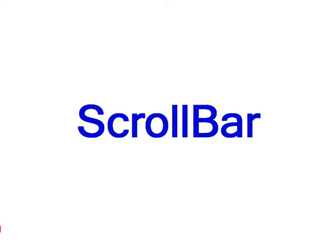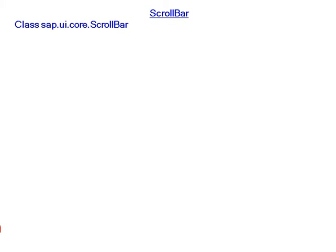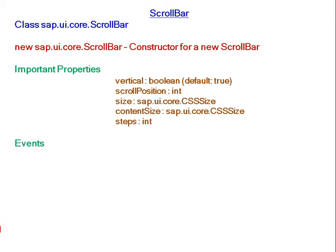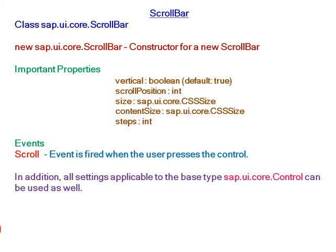SAP UI5 ScrollBar belongs to class sap.ui.core.ScrollBar. For creating a new scroll bar, the constructor is new sap.ui.core.ScrollBar. Important properties are vertical, scroll position, and so on. The event is scroll, which fires when the user interacts with the control. All settings applicable to the base type sap.ui.core.Control can be used as well.